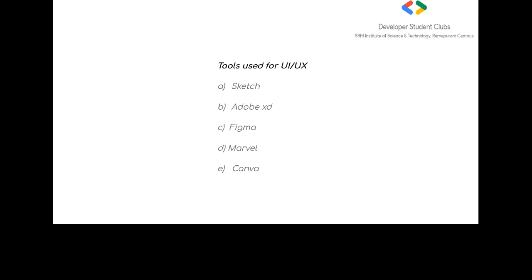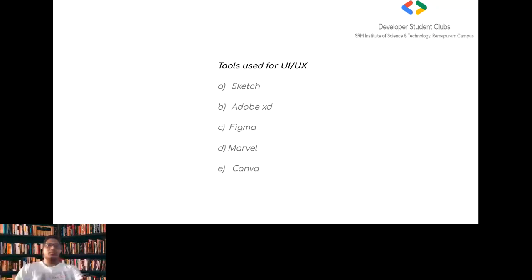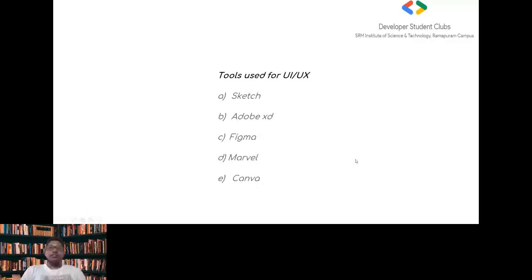UI revolves around visually directing the user about the app interface. When we download a new app, it shows directions with arrow marks about what features are available — that's the UI revolving around that. UX includes researching, testing, developing, and prototyping. UI, unlike UX, is limited to the screen, while UX transcends beyond it and includes all interactions and touch points with the user.